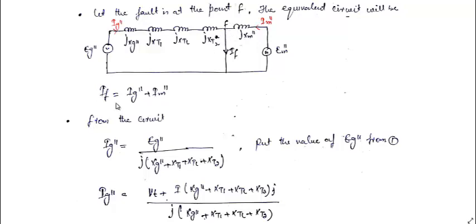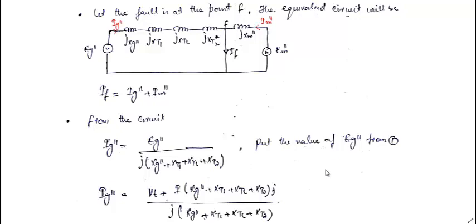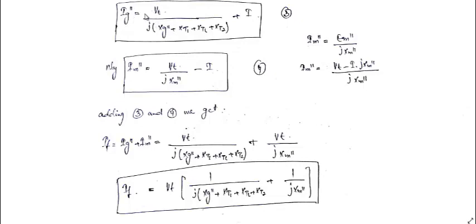By KCL at fault point F: If = Ig double dash + Im double dash. From the circuit, Ig double dash = Eg double dash divided by (Xg double dash + XT1 + XTL + XT2). Substituting Eg double dash from equation 1, that is replacing it with Vt plus I times the sum of these reactances, the terms cancel and we get Ig double dash = Vt divided by that reactance term, plus I.